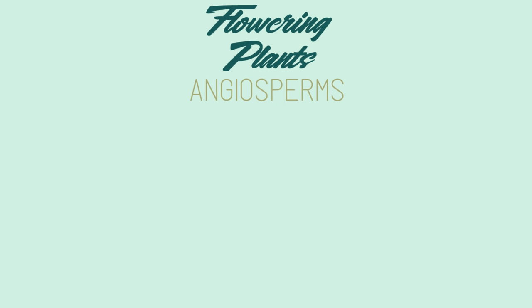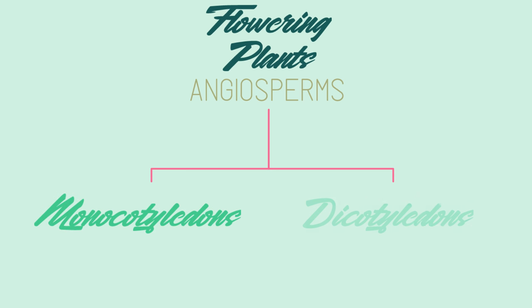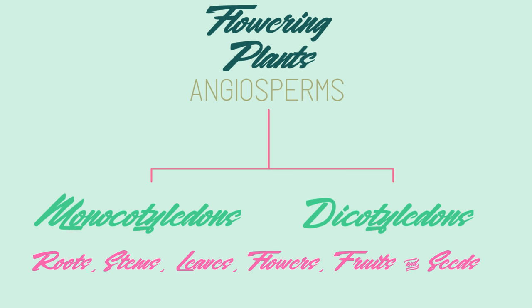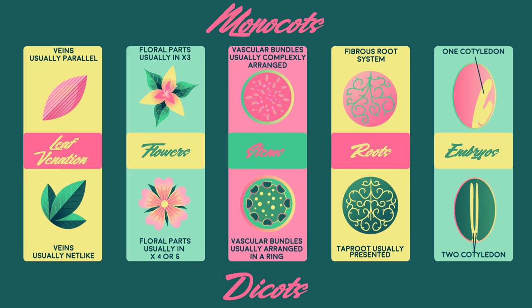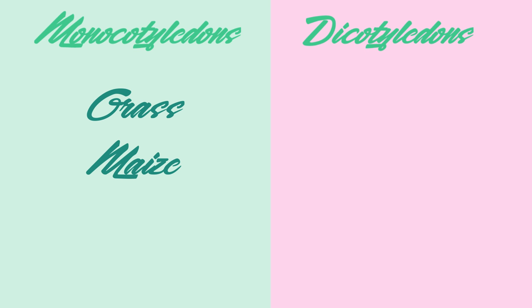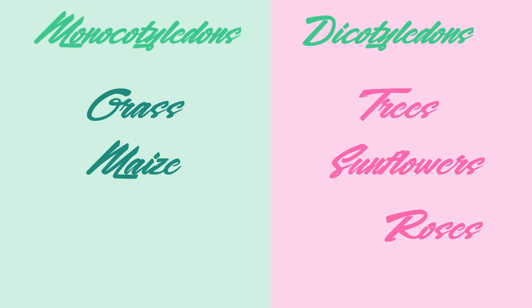Angiosperms are the largest and most diverse group in the plant kingdom. Angiosperms consist of two major groups: monocotyledons and dicotyledons. These groups differ with respect to their roots, stems, leaves, flowers, fruits, and seeds. Some observable differences are that monocots have parallel veins and petals in groups of three, whereas dicots have net-like veins and petals in groups of four or five. Grass and maize are examples of monocots, whereas trees, sunflowers, and roses are examples of dicots.